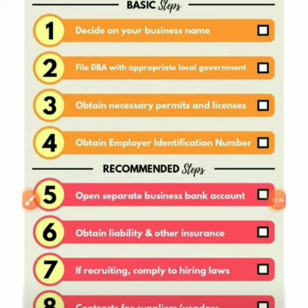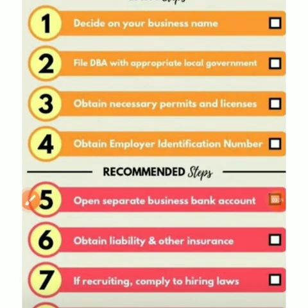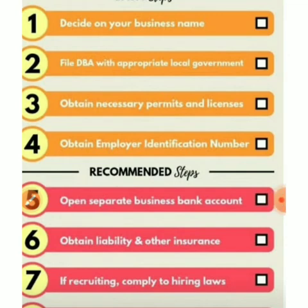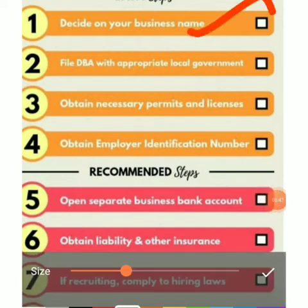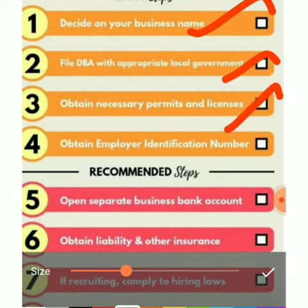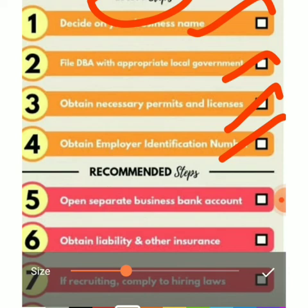Now, how to start a sole proprietorship. There is an eight-step checklist. First, decide on your business name. Second, file a DBA (Doing Business As) with the appropriate local government or municipality. Third, obtain necessary permits and licenses. Fourth, obtain employer identification numbers. These are the basic steps to start a sole proprietorship.